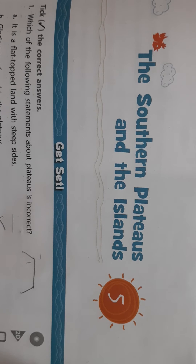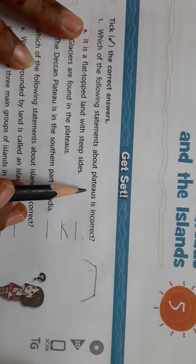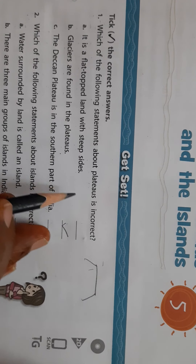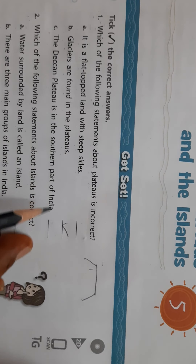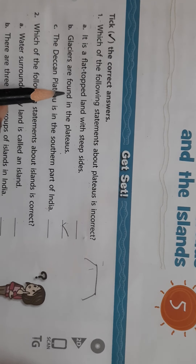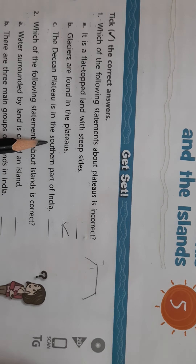Take out your book, page number 37. Let us start with Get Set. The first question: which of the following statements about plateaus is incorrect? 'It is a flat top land with steep sides' — this is correct. 'Glaciers are found in the plateaus' — this is incorrect. So you take this one: glaciers are not found in the plateaus. 'The Deccan plateau is in the southern part of India' — yes, this is correct. Among these three, you have to take only the incorrect one.